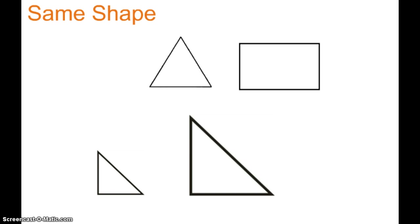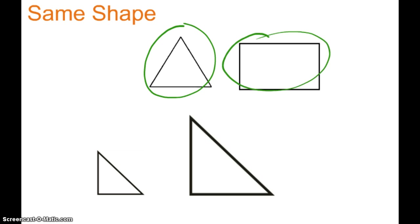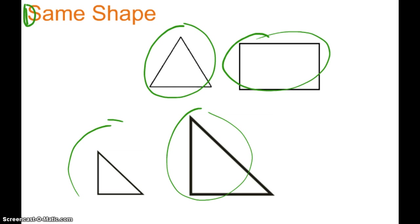The first critical attribute is that figures have to be the same shape. We cannot say that this triangle is similar to this rectangle because they're not even the same shape. But we could say that this right triangle is similar to this right triangle because they are the same shape. So defining characteristic number one for similar figures is that they must be the same shape.